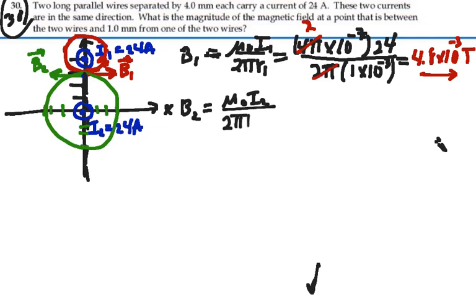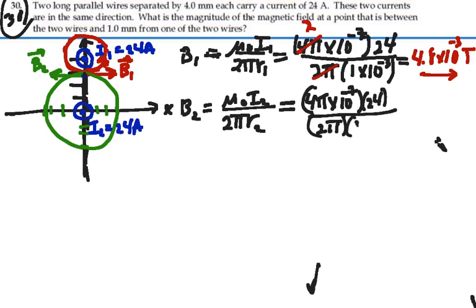And that's equal to 4 pi times 10 to the minus 7 times 24 over 2 pi, and we're 3 millimeters away, 3 times 10 to the minus 3, and that's going to be a third of that, so that's going to be 1.6 times 10 to the minus 3 Tesla, and that's going to left like this.